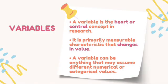A variable is the heart or center concept in research. It is primarily a measurable characteristic that changes in value. It may differ from one characteristic to another, one group to another group, one person to another person, or even with the same person over time. A variable can be anything that assumes different numerical or categorical values.